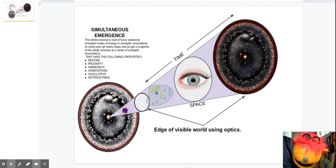The whole universe is a Taoistic flux. If you don't get that, then you're going to be making the wrong guesses about how you put it together. So, the whole universe is built of fuzzy subatomic emergent nodes of energy or energetic associations.